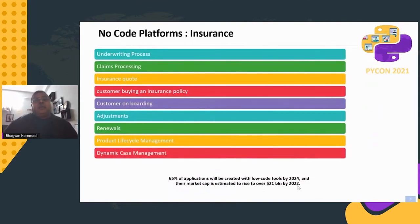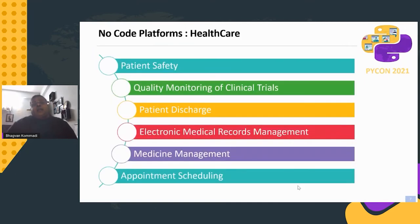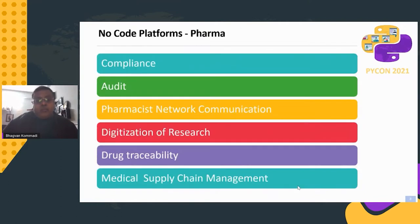For insurance on no-code platforms, you focus on underwriting, claims processing, customer onboarding, policy renewals, product lifecycle management, and dynamic case management. According to surveys, 65% of applications will be created with low-code tools by 2024, with a market cap estimated to rise over $21 billion by 2022. In healthcare, the focus shifts to patient safety, quality monitoring, patient discharge, electronic medical records, medicine management, and appointment scheduling. On the pharma front: compliance audits, pharmacist network communication, research digitalization, and traceability.